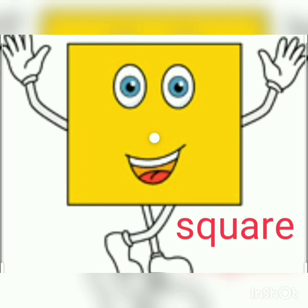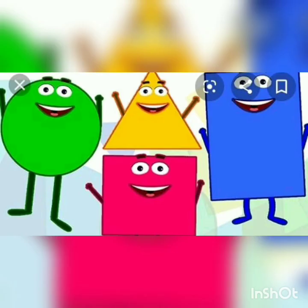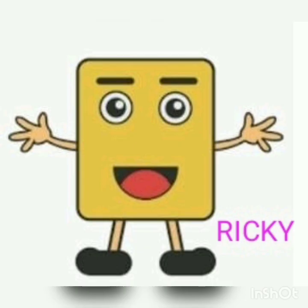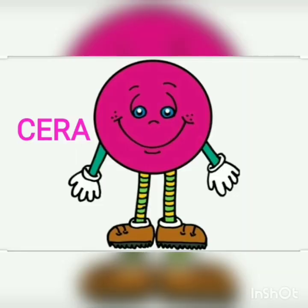So I want to tell a story about shapes. Once upon a time, there were four friends: Squarey the square, Rikki the rectangle, Triggy the triangle, and Sira the circle.